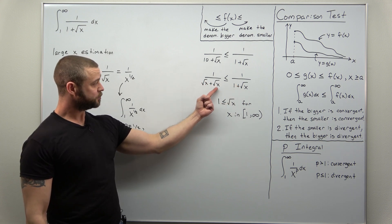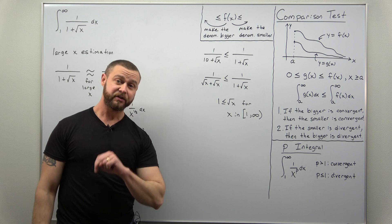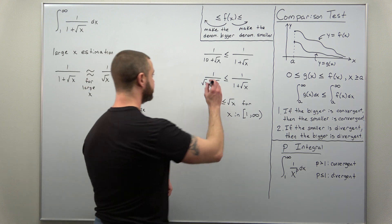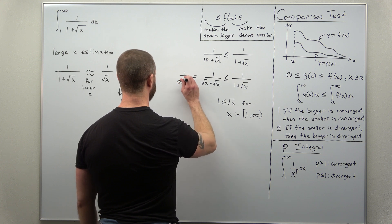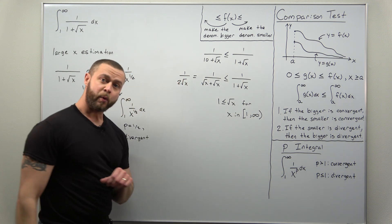I have square root of x plus square root of x. That's two of the same like term. I can write this as one over two square root of x.